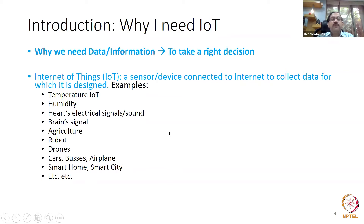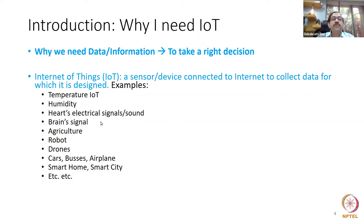For example, in your home, if outside temperature goes up and you feel uncomfortable, the sensor inside the home will take the temperature to the controller, and the air conditioner will take a decision to decrease the temperature of the home. Automatically, without you doing anything — you just say you feel comfortable at 23 degrees Centigrade, that's all.